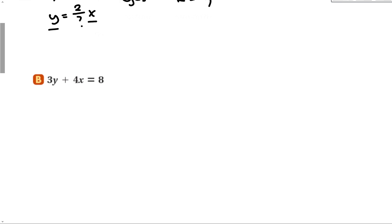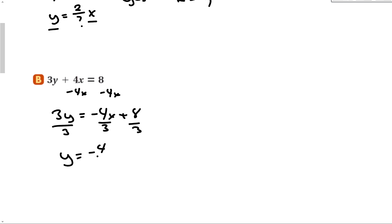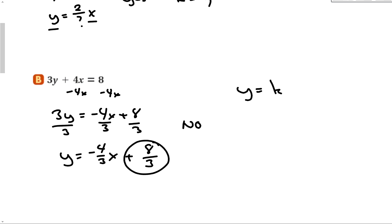For part b, we subtract 4x from both sides, giving 3y equals negative 4x plus 8. Dividing everything by 3 gives y by itself, but we get negative 4 over 3 times x plus 8 over 3. This is not direct variation because we don't have y equal to something times x alone — we have something times x plus something else. That is a linear equation, not direct variation.